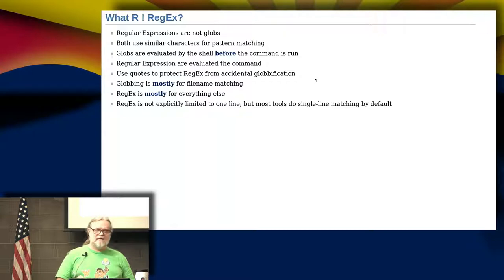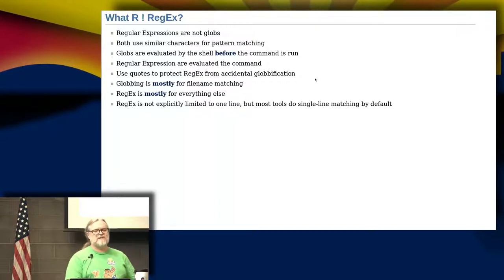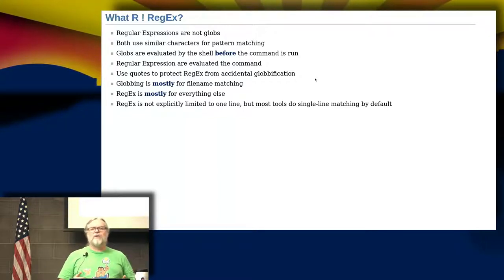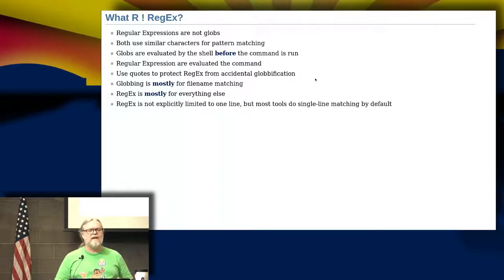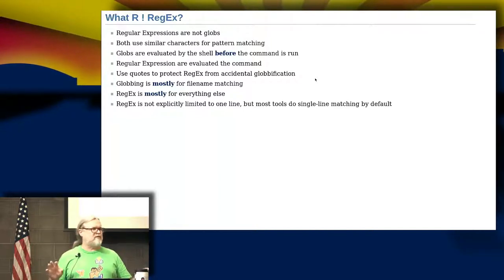Both globs and regex use similar character sets for matching, but globs are evaluated by the shell before the command is even run. The shell looks at glob patterns and matches them before starting the command. Regular expressions are generally evaluated by the command itself. Use quotes to protect your regular expression from accidental globification. Globbing is mostly for file name matching; regular expressions are mostly for everything else.